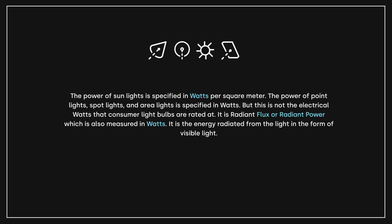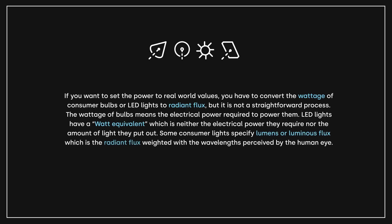The power of lights is specified in watts per square meter. The power of point lights, spotlights, and area lights is specified in watts — but this is not the electrical watts that consumer light bulbs are rated at. This is radiant flux or radiant power, which is the energy radiated from the light in the form of visible light. If you set the power to real-world values, you'll need to convert the wattage of consumer bulbs or LED lights to radiant flux, which is not a straightforward process. Some consumer lights specify lumens or luminous flux, which is radiant flux weighted with the wavelengths perceived by the human eye.